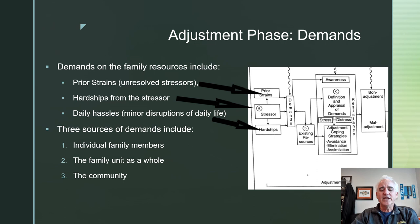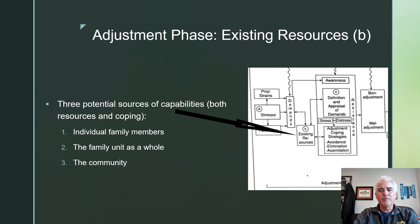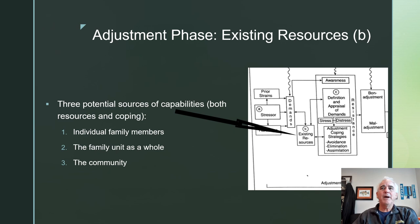Let's move on to the next part of the adjustment phase — the B. As you remember from the ABCX model, B is the existing resources of the family. There are three potential sources of capabilities in coping — both resources and coping. There are individual family members who may step up to help the family cope, the family unit as a whole, and the community that may step up to help the family cope with the stress.